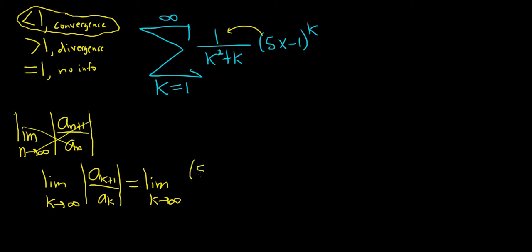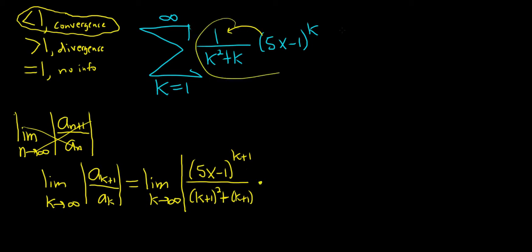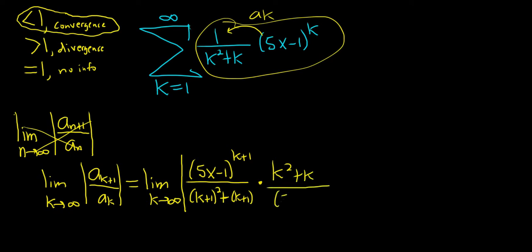So I'll write it like this: 5x minus 1 to the k plus 1, over k plus 1 squared plus k plus 1. And this is an absolute value. And then instead of dividing, we'll multiply by the reciprocal — times the flipped a sub k. This whole thing here is your a sub k: k squared plus k over 5x minus 1 to the k.